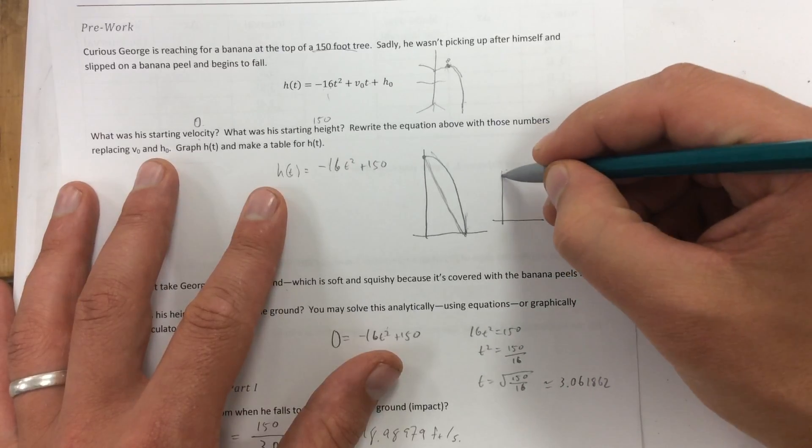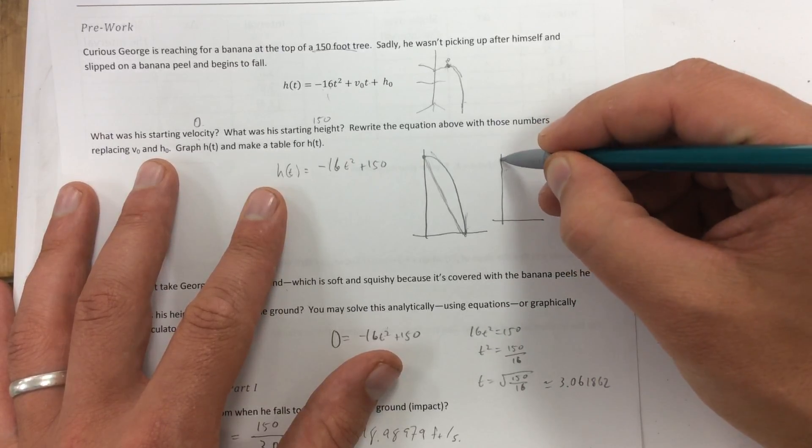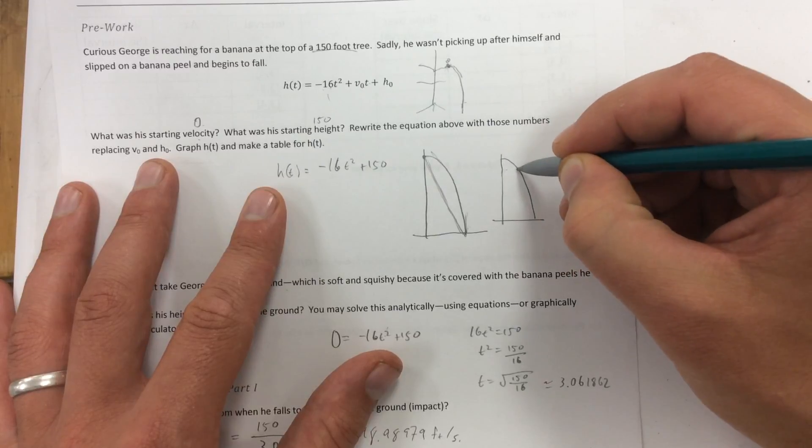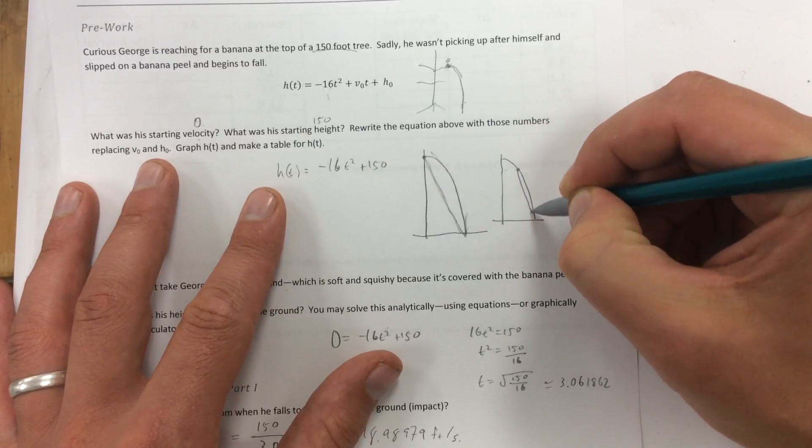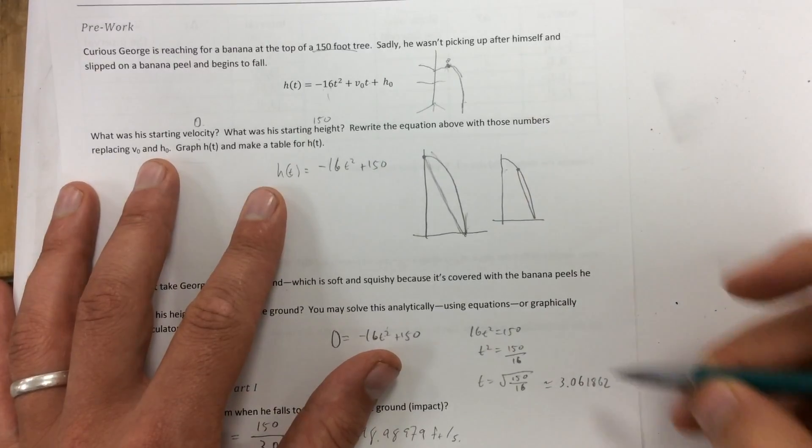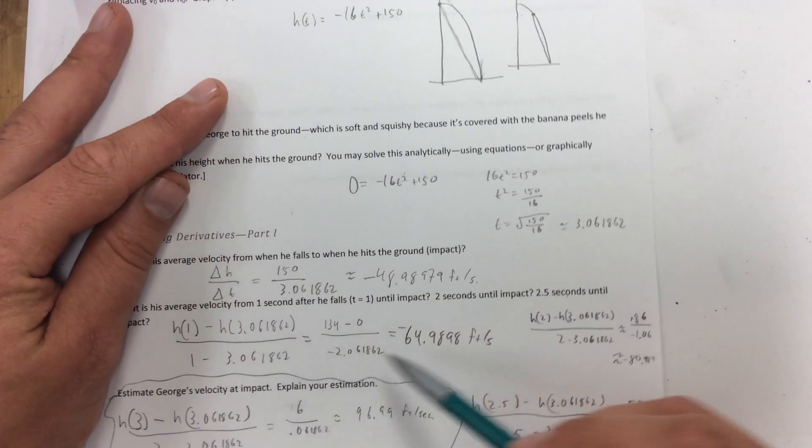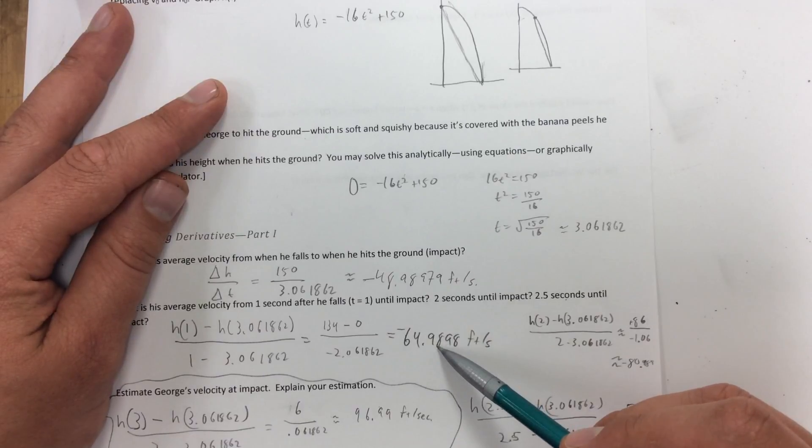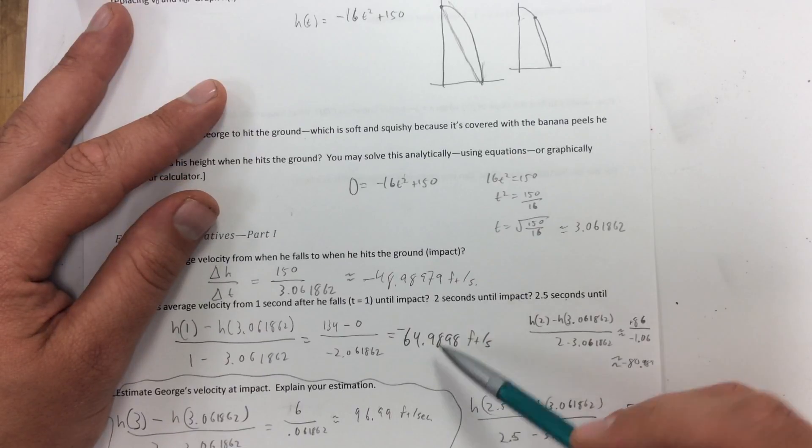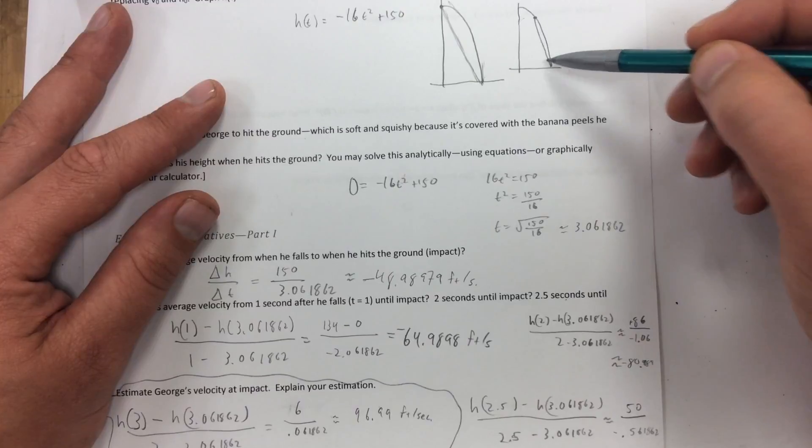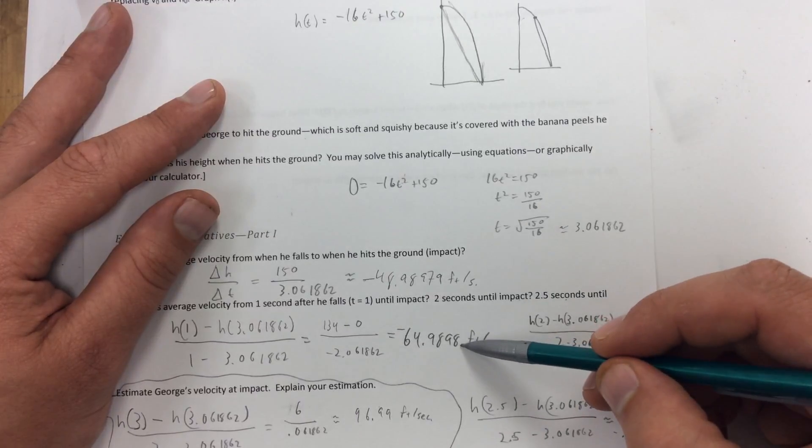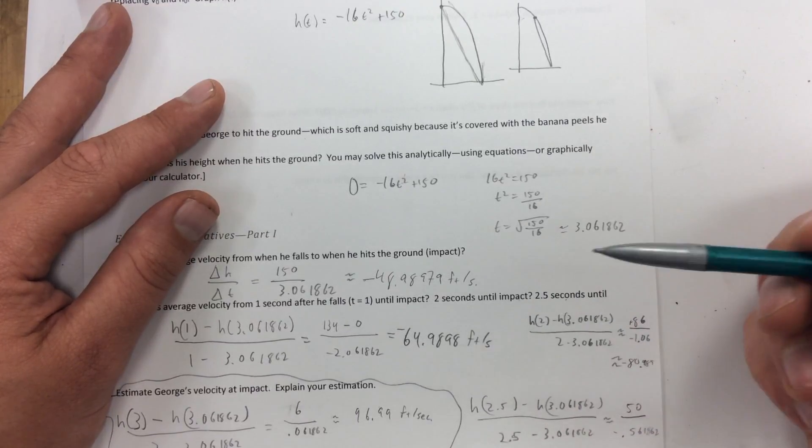Well, what happens if we used from one second? Okay, at one second, we found he had an average velocity from one second until he hit of negative 64.9898, about 65.